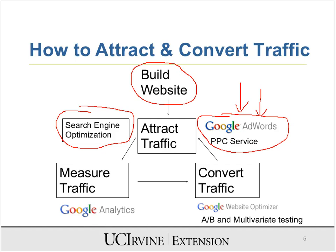You can attract traffic by doing search engine optimization, which basically means modifying your website so that it has the right keywords. A Google bot can then index the website, and when someone searches for that particular keyword, your website will be displayed.